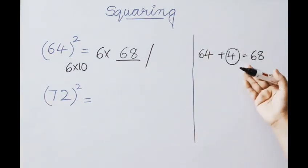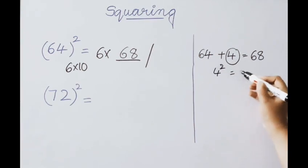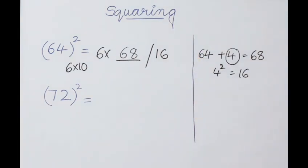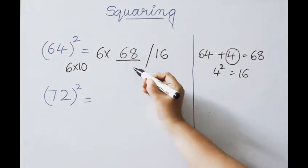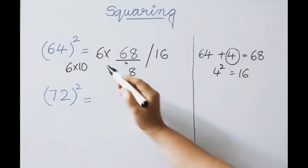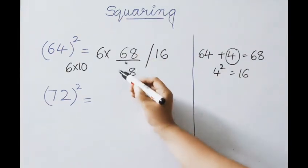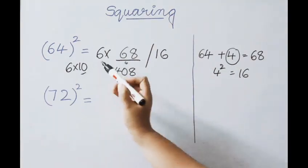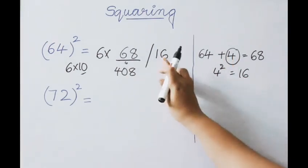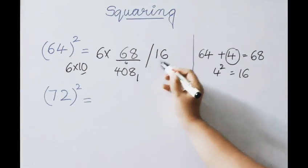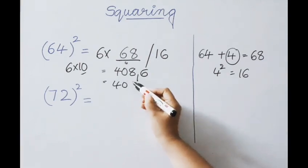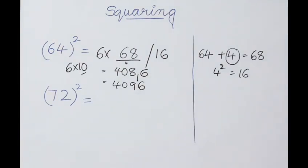The second part is the square of the excess value: 4 squared is 16. Write down 16. Now multiply the first part by 6: 6 times 68 — 6 eights are 48, write 8 carry 4; 6 sixes are 36 plus 4 is 40. Since base is related to 10, only one digit is allowed; write 1 as carry and second part digit 6. After adding: our answer is 4, 0, 8 plus 1, giving 9, and last digit 6 — so 4096.